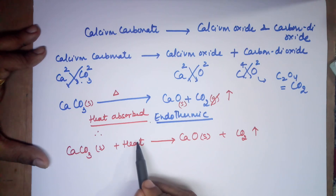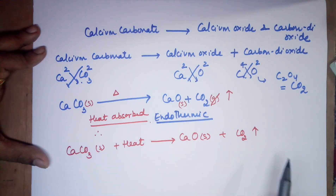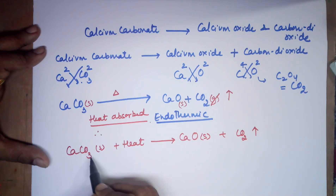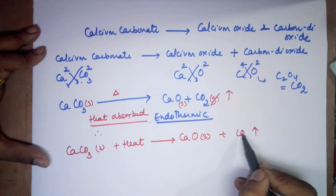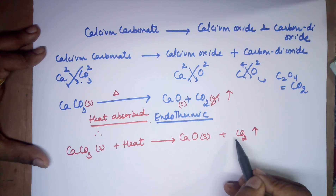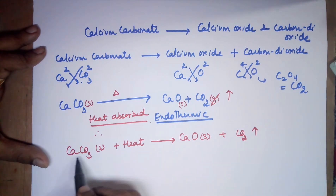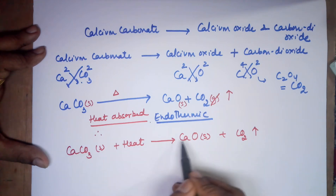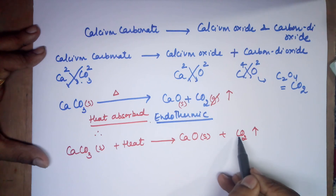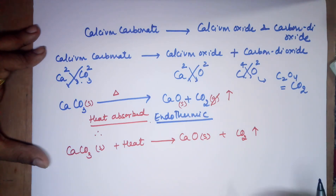Now coming to the balancing part — have a closer look at the equation. Calcium: one on the left, one on the right — balanced. Oxygen: three on the left (one in CaO, two in CO2 — wait, CaCO3 has three oxygens on the left; CaO has one and CO2 has two on the right, totaling three). Carbon: one carbon on each side. So calcium is once, oxygen is three times, and carbon is once on both sides. Your equation remains balanced.